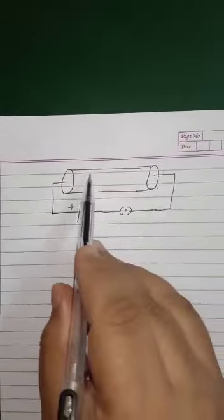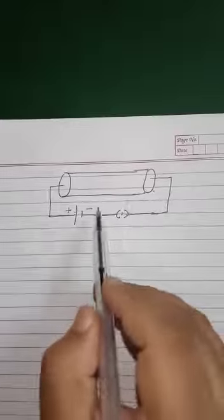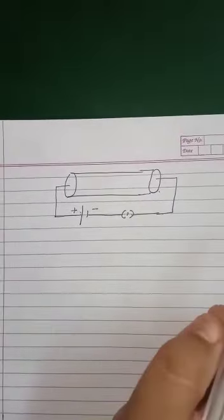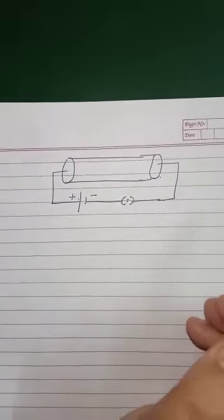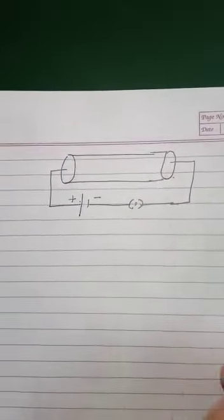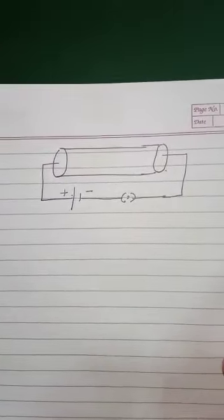Electrons will start moving from the negative terminal towards the positive terminal of the battery, and current will flow.